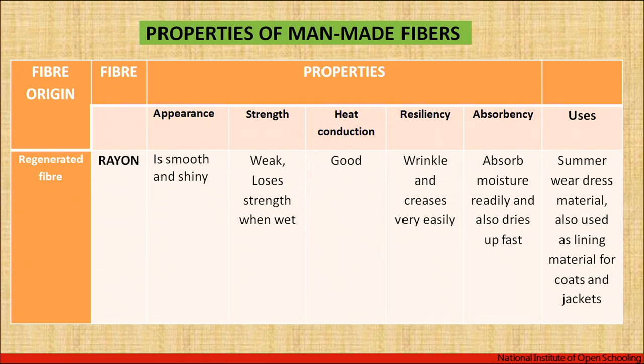Next are the properties of man-made fibers, starting with rayon. Rayon is a regenerated fiber made up of a cellulosic part mixed with chemicals, also called artificial silk because of the sheen and smoothness it gives. Its strength is weak and it loses strength when wet. It is a good conductor of heat. Resiliency is poor — it wrinkles and creases easily. It absorbs moisture readily and dries up fast. Uses include summer dress wear and as lining material for expensive coats and jackets. Rayon has shine and luster and can be extruded through spinnerets in filament form.